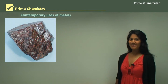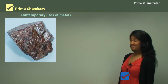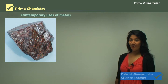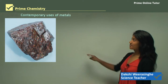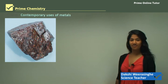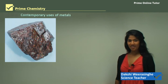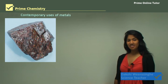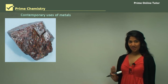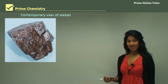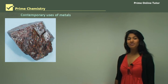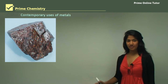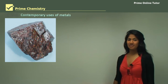Hello everyone. Today we will be doing the second section of the metals topic, and that is the contemporary uses of metals. In this topic we will be looking at three different metals: titanium, steel and aluminium, and we'll be looking at alloys of those and the uses.